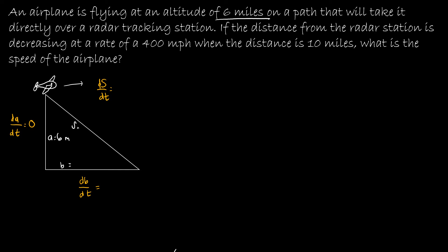Then it says the distance from the radar station — so there's some sort of radar station here — is decreasing at a rate of 400 miles per hour. So this is a rate. If we're talking about the distance from the radar station, we're talking about dS/dt, which is 400 miles per hour. We're talking about this plane getting closer to the radar station. Then it says when the distance is 10 miles — that is a static value, so S equals 10 miles.